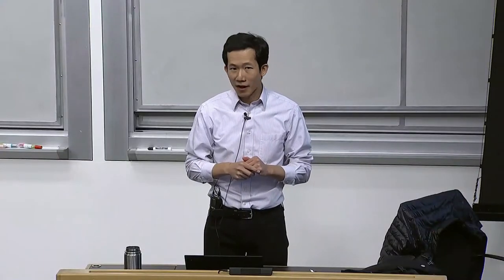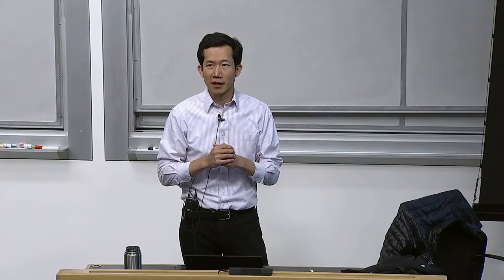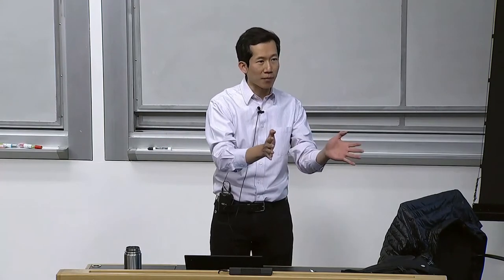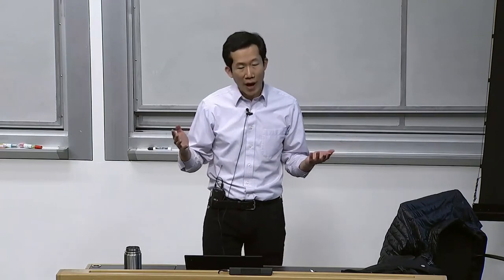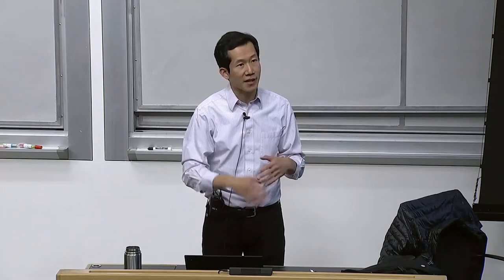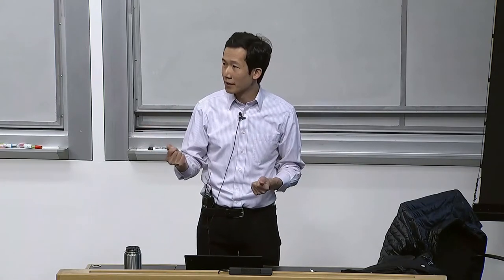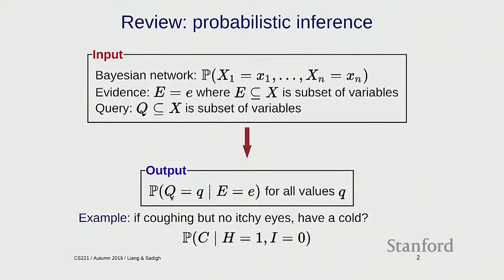Bayesian networks are really powerful as a way to describe knowledge. A lot of AI today focuses on particular tasks where you define inputs and outputs and train a classifier — that classifier can only do this one thing. But the paradigm behind Bayesian networks is that you develop a knowledge source, captured by a joint distribution. Once you have it, you use the tools of probability to answer arbitrary questions: you can give any pieces of evidence and any query, and it's clear what to compute.